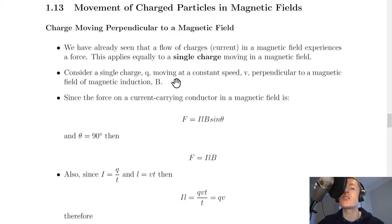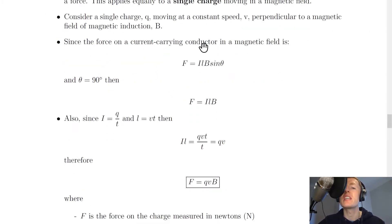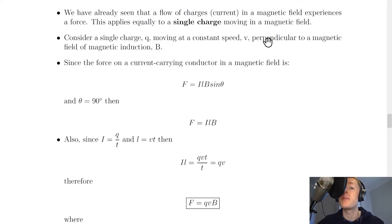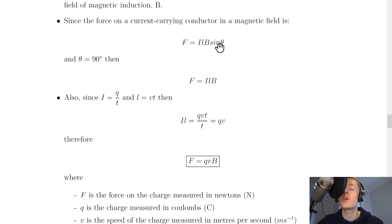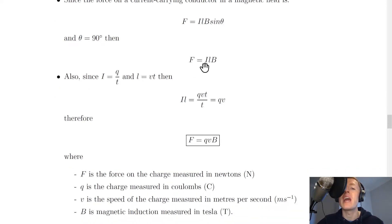Consider a single charge q moving at a constant speed v perpendicular to a magnetic field of magnetic induction B. Since the force on a current carrying conductor in a magnetic field is F equals ILB sin theta, which we've seen before, and theta equals 90 degrees because the charge is perpendicular to the magnetic field, that means sin 90 equals 1 in this equation, which simplifies to F equals ILB.